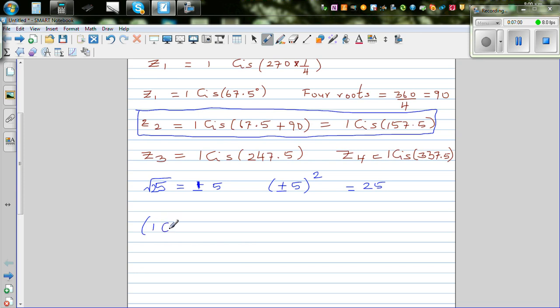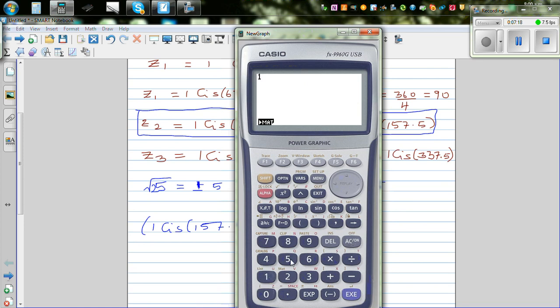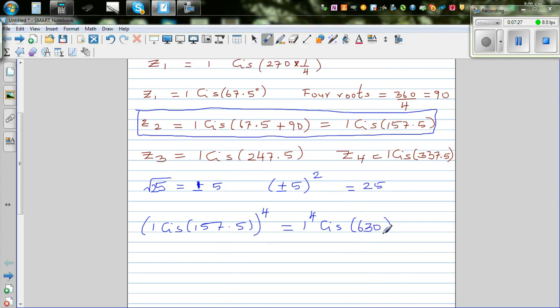Let's raise 1 cis 157.5 to the power 4. Using again De Moivre's theorem, this would be 1 raised to 4 cis 157.5 times 4. So 157.5 times 4 is 630. Now 630 is—can I say this is 1 cis 360 plus 270? This is 630 degrees is 1 cis 360 plus 270. And 360 means it has done 1 rotation or revolution. So this is nothing but 1 cis 270.